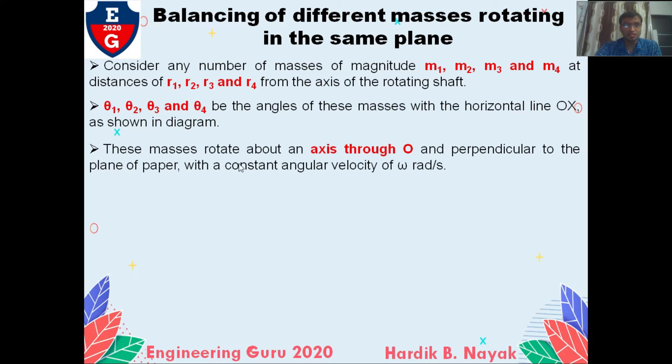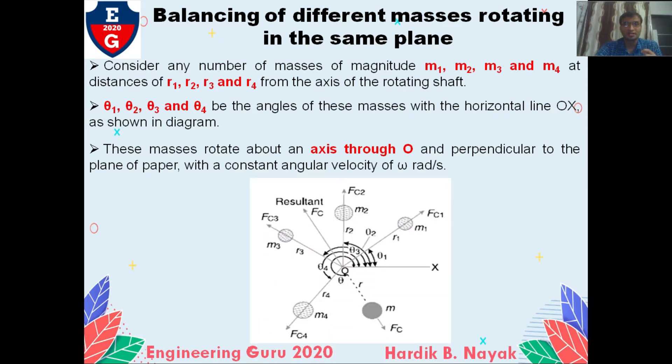These masses rotate about an axis through O, perpendicular to the plane of the paper, with a constant angular velocity omega radians per second. The axis of rotation is the same for all masses because we have four masses in one plane.